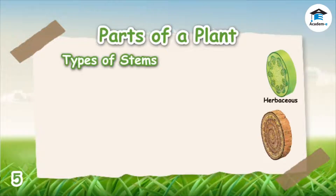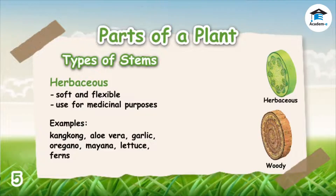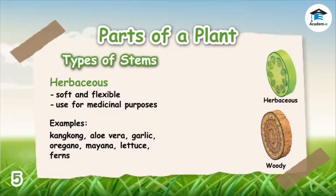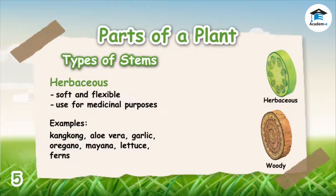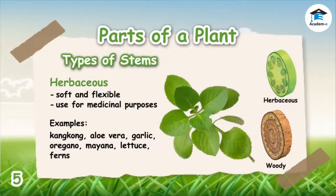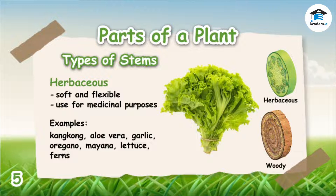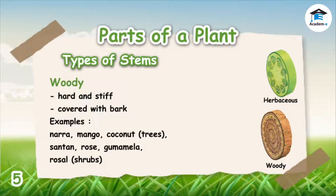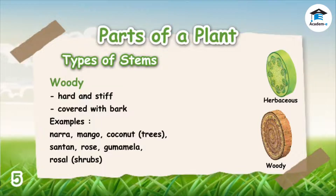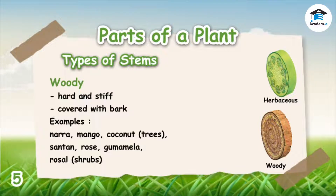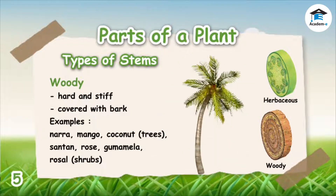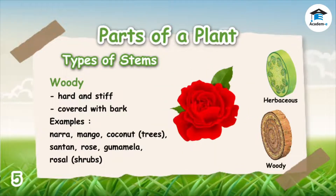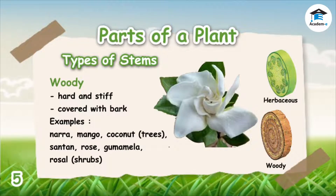There are two types of stems: herbaceous and woody. Herbaceous stems are soft and flexible; most of them are used for medicinal purposes. Examples of plants with herbaceous stems are conchon, aloe vera, garlic, oregano, mayana, lettuce, and ferns. Woody stems are hard and stiff and are covered with bark. Examples include trees like nara, mango, and coconut, as well as shrubs like santan, rose, gumamela, and rosal, which have short and hard stems.